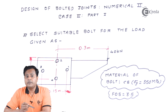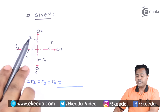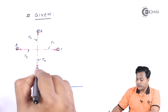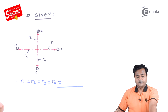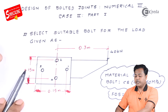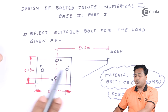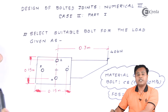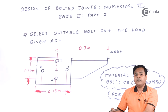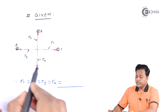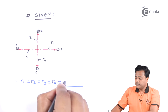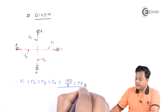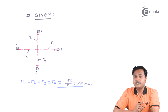Let us begin with the given parameters. We will draw the vector diagram of the given bolts — bolt number 1, 2, 3, and 4. The dimensions given are 150 millimeter between two bolt centers. Taking the center of the bolt group, the radial distances R1, R2, R3, and R4 are all equal — each is 150 divided by 2, which is 75 millimeter. This radius is an important factor for solving these numericals.